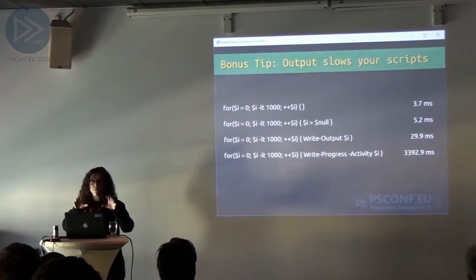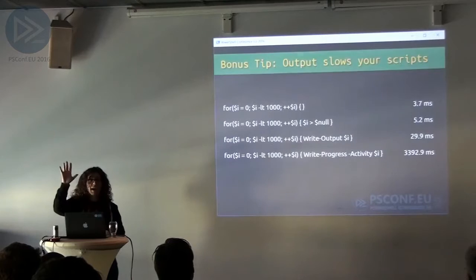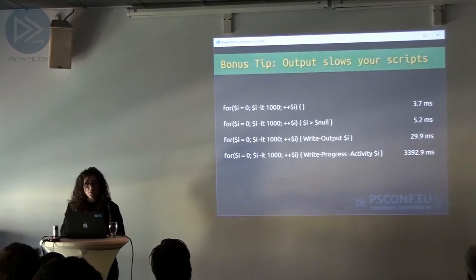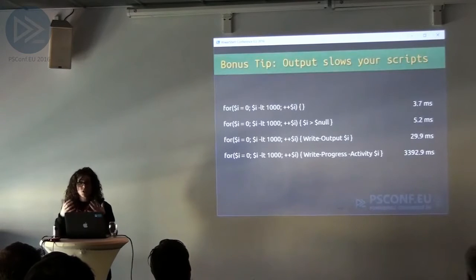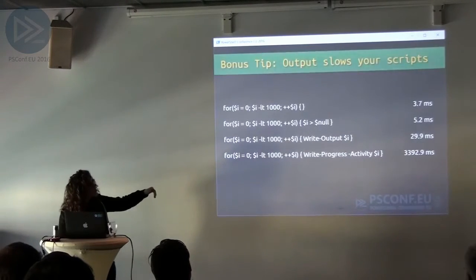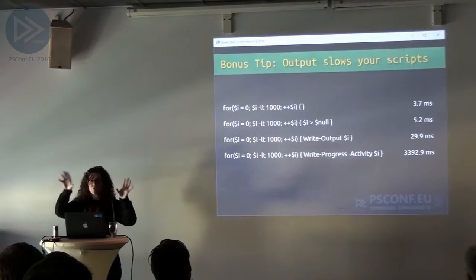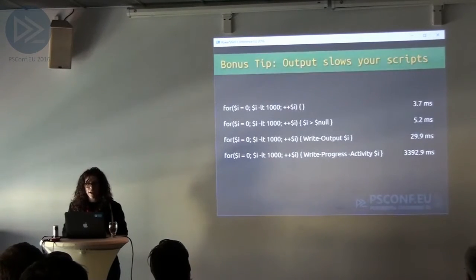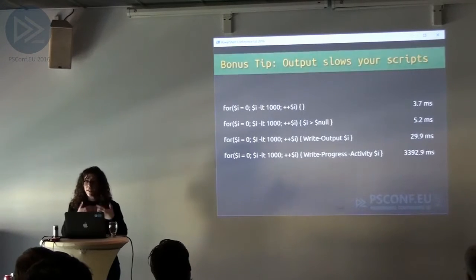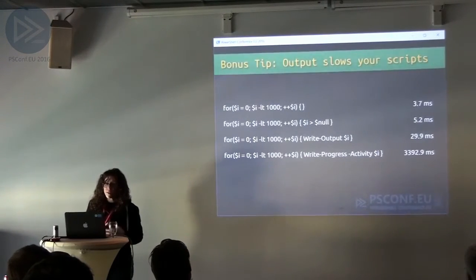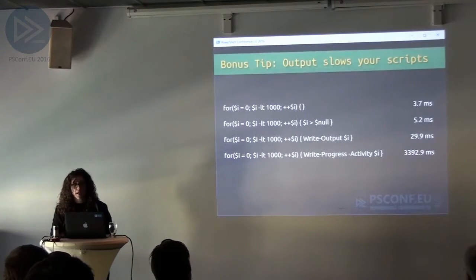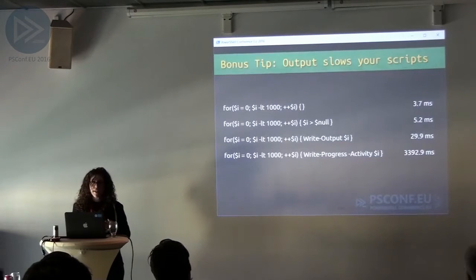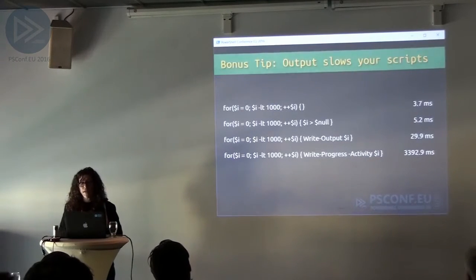This made me really excited about performance, so I wanted to show you 5 bonus tips. As you remember, I learned that Write-Output slowed my script down quite a bit. Here are some differences: if you just go through and do nothing, it takes 3.7 milliseconds. If you pipe it to null, it increases by 5.2. Write-Output increases it to a massive 29.9, and if you use Write-Progress, that increases it by a thousand percent.